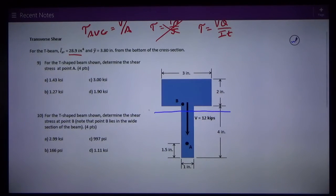So Y bar is given to us as 3.8 inches. Remember that Y bar locates the neutral axis. Neutral axis right there. Therefore Y bar from the bottom, as the instructions say, is 3.8 inches.